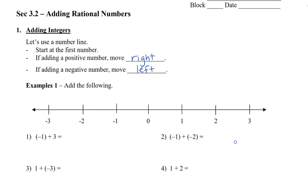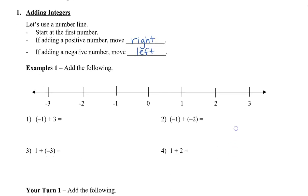So let's take a look at these four examples. We have negative one, so we start at negative one, and we're going to add three. So we're going to go one, two, three, and we end up at two.